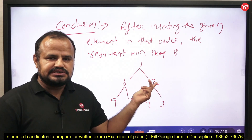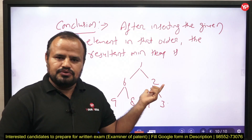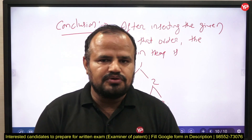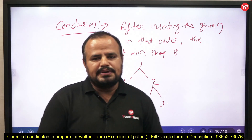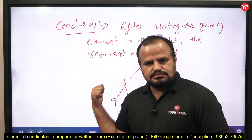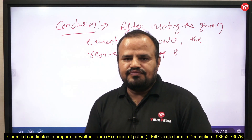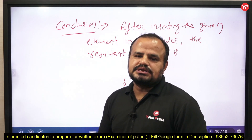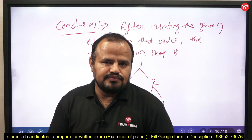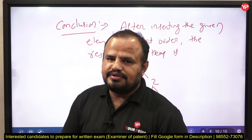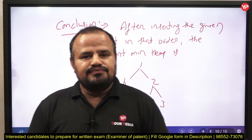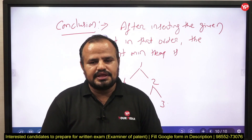If you want to add more data, you can write the time complexity, that is O(n log n). But it is not mandatory, because in the question they are not asking about the time complexity to construct a min heap. This is the solution for the previous year problem from 2018. URpedia has already launched the module for the Controller of Design and Patent exam — if you want to prepare for that exam, you can join that module. Thank you so much.